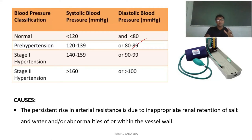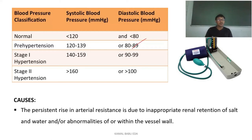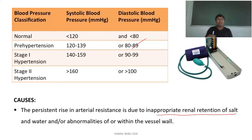Coming to the causes, there are different types. It can be due to arterial resistance, which may be caused by inappropriate renal retention of salt and water or abnormalities within the blood vessel wall. So the persistent rise in arterial resistance, due to inappropriate renal retention of salt and water or vascular abnormalities, is one of the primary causes.